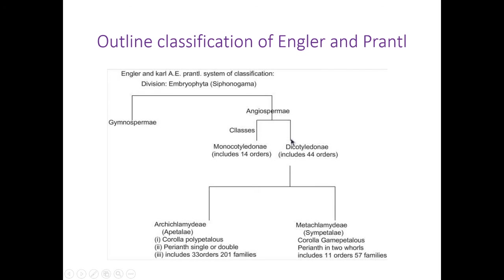They give the names Archichlamydeae and Metachlamydeae. Archichlamydeae means apetalous, with polypetalous corolla, perianth single or double; it is divided into 33 orders which include 201 families. The second subclass is Metachlamydeae, also called Sympetalae, having gamosepalous corolla — where petals are fused in the flower. When the perianth is present it is arranged in two whorls; individual members of the perianth are called tepals. Engler and Prantl classified Sympetalae into 11 orders and 57 families.